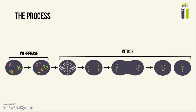Next we're going to look at the process of mitosis and what happens before that. This is especially for the extended paper. You need to keep in mind that the exact duplication of the chromosomes actually occurs before the process of mitosis, and the duplication of the chromosomes occurs in something called an interphase, as you can see here.